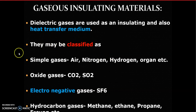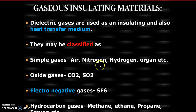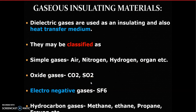How do we classify gaseous insulating materials? Simple gases like air, which you can see in transmission lines and is naturally available; nitrogen, hydrogen, argon; then oxide gases like carbon dioxide or sulfur dioxide; and then electronegative gases - SF6. SF6 is the most popularly used gas in electrical devices.